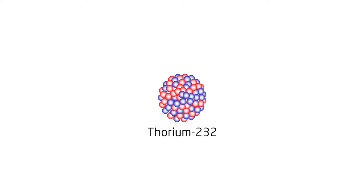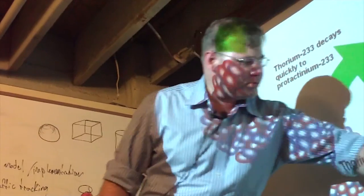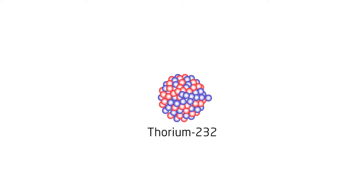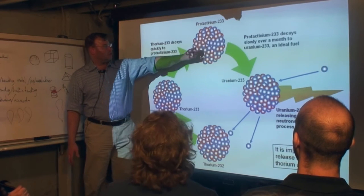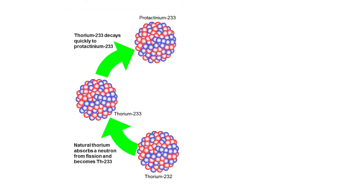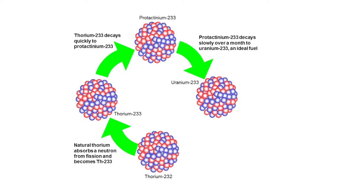One of them is if you hit thorium with a neutron, the thorium will absorb the neutron and it will turn from thorium-232 into thorium-233. It's going to decay into protactinium-233 and then it will decay over about a month to uranium-233.